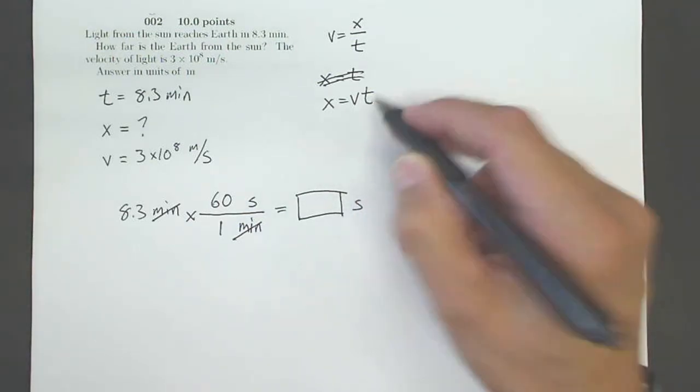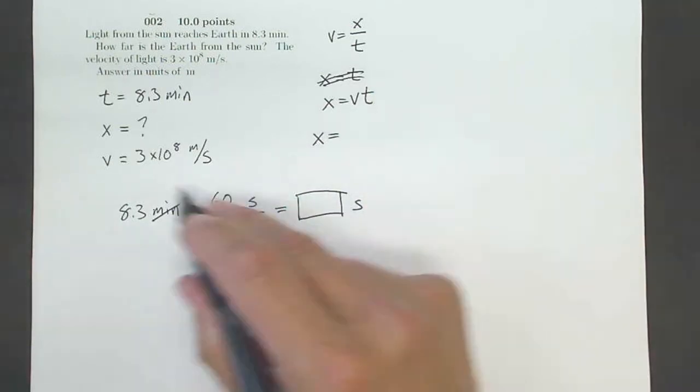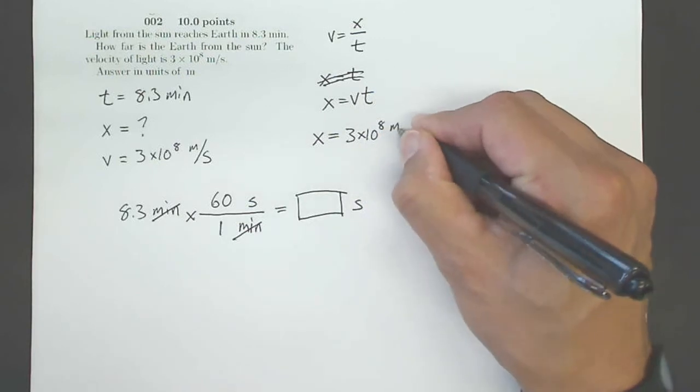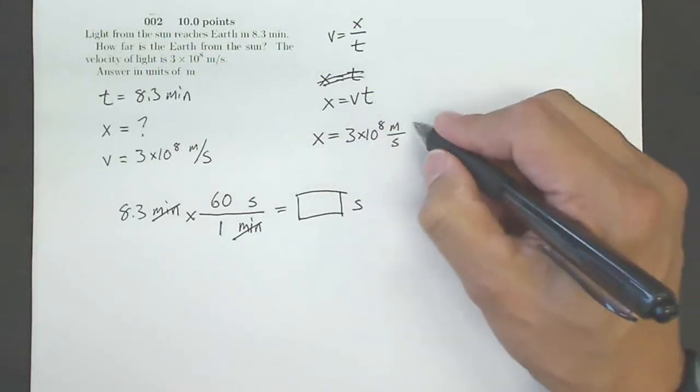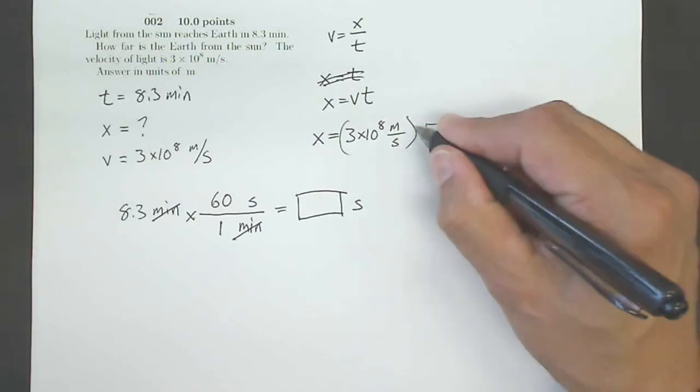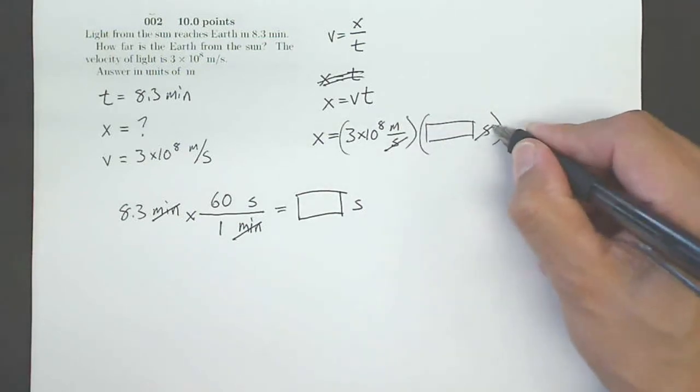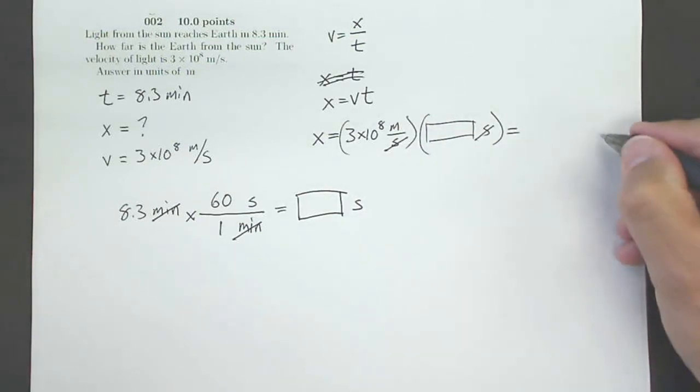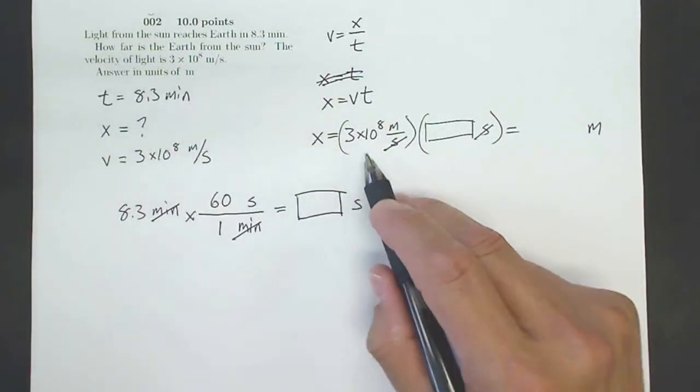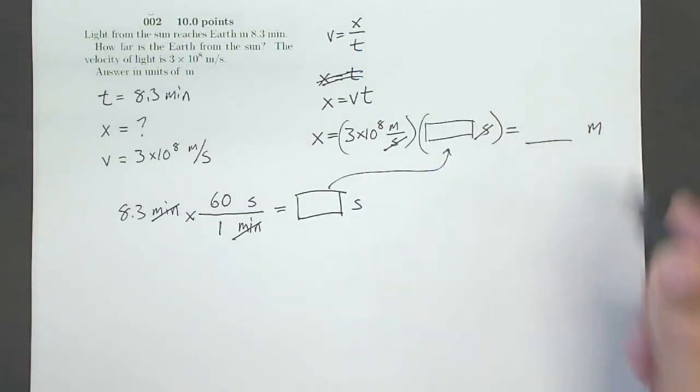Now I can do my displacement is my velocity times time. So my displacement equals my velocity, which is 3 times 10 to the 8th meters per second, times my time. And my time is going to be whatever this is in seconds, this many seconds. Now I'll see seconds here and seconds here will cancel out. And that will give me some answer in meters, which is good because it says to answer in units of meters. So when I do 3 times 10 to the 8th times this answer, which came from there, I will have my answer in meters.